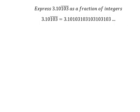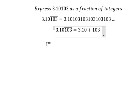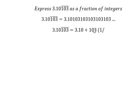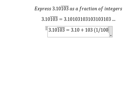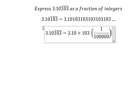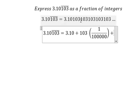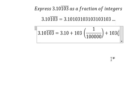For this one, we can write it like this: 3.10 plus 103 multiplied by 1 over 100,000, because the digits 103 repeat. That means we have this number here.